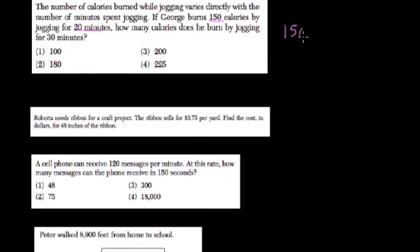I'll use a ratio: 150 calories for 20 minutes, x calories for 30 minutes. Or as a proportion: 150 over 20 equals x over 30.